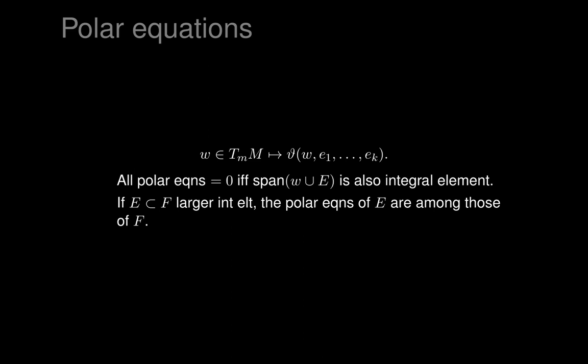If capital E is an integral element contained in a larger integral element F, then the polar equations of E are among those of F. That's because we use the same differential forms, but E can only pick vectors from the smaller space, while F can pick from a larger space. So larger integral elements typically have more polar equations, sometimes exactly the same.